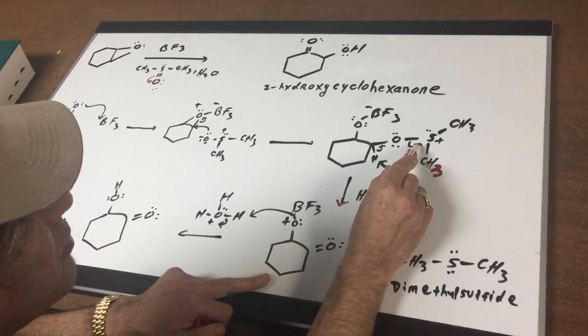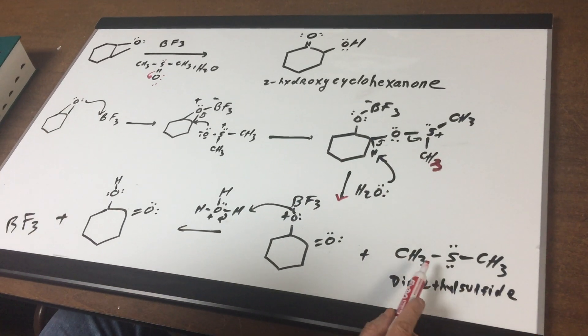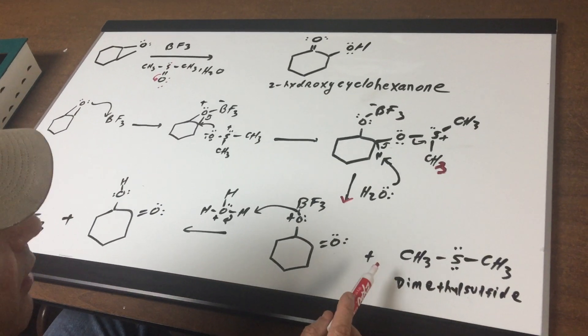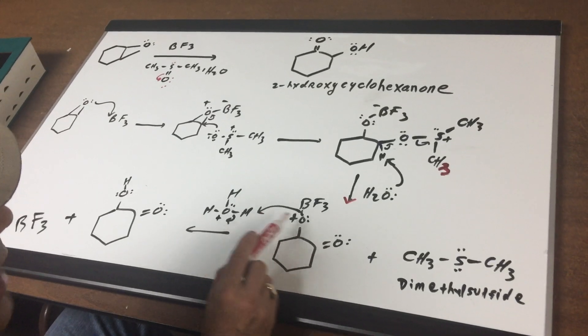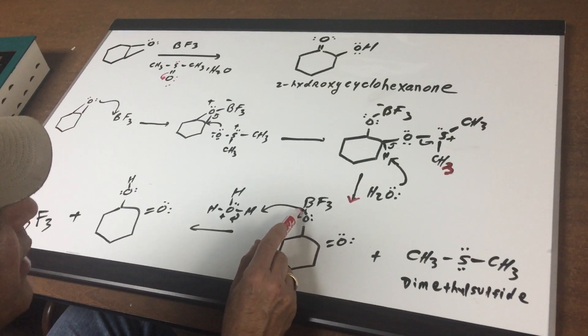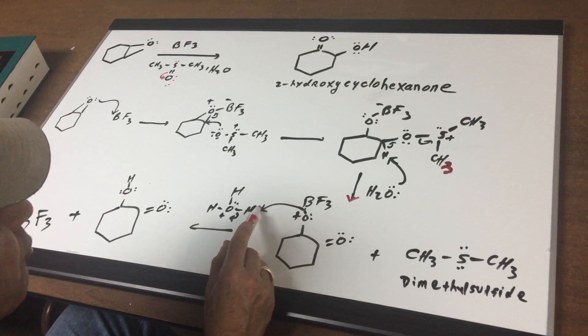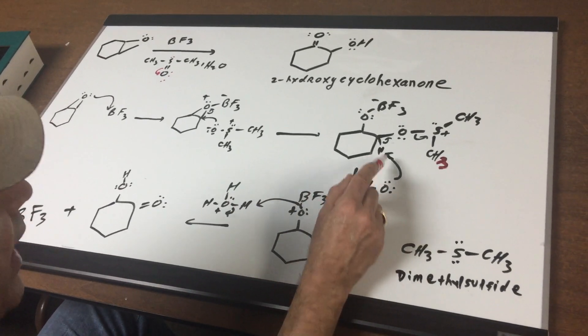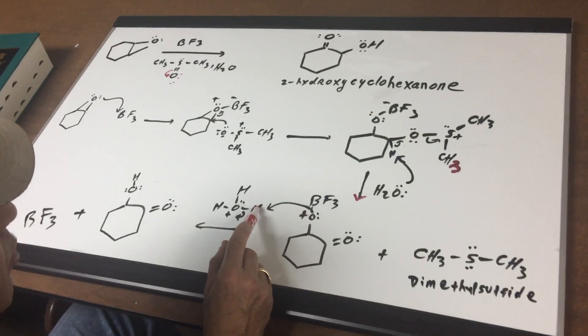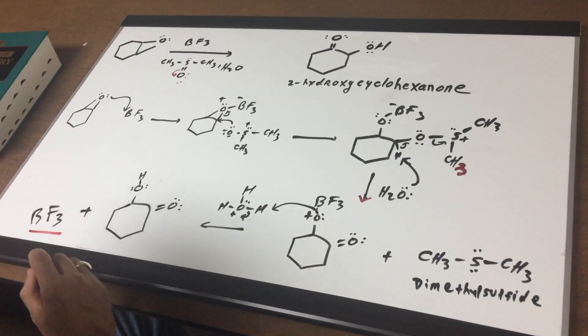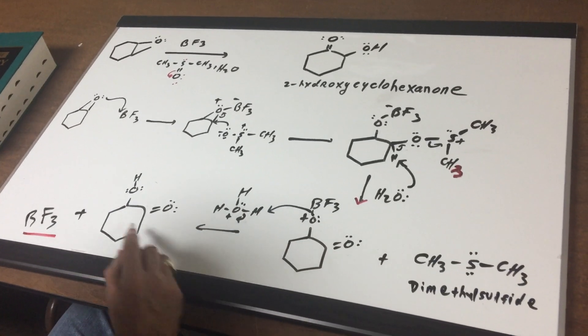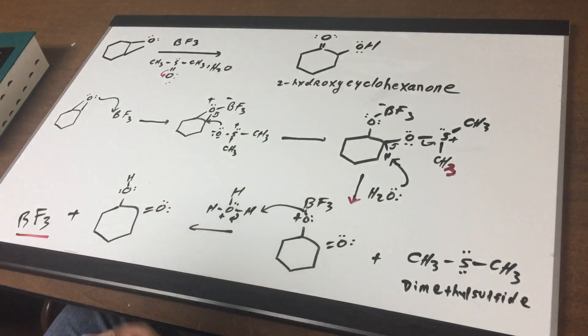And then this moves out to form my byproduct dimethyl sulfide. My final step is the bond between the O and the B is broken. The arrow moves out. We have water, if you remember, captured an H. That's how we got H3O+. We captured an H, we protonate it, and that would release the boron trifluoride, regenerate it. We're left with the OH, and this is the same as this.